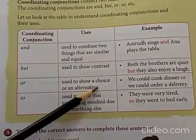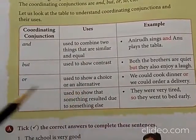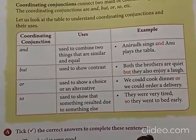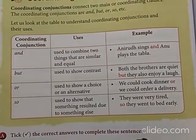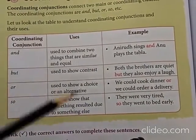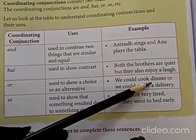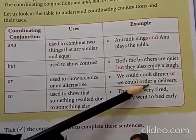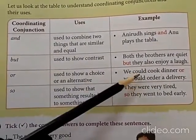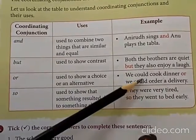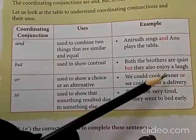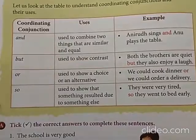Then we have the coordinating conjunction 'or'. It is used to show a choice or an alternative — this or that. For example: We could cook dinner, or we could order a delivery. There are two alternatives here, and to show these alternatives we use the word 'or' to join them.